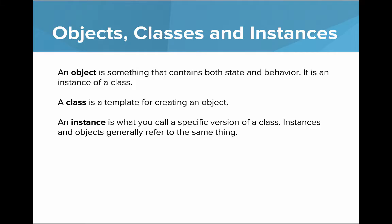Between objects, classes, and instances. An object is something that contains both state and behavior. It's an instance of a class. A class is a template for creating an object, and an instance is what you call a specific version of the class. Instances and objects generally refer to the same thing.